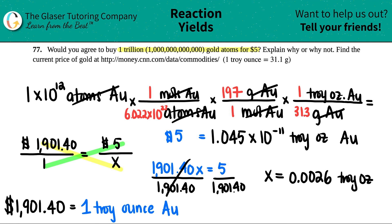This is what my friend was offering for five dollars. Is this a good deal when the true value of five dollars worth of gold is this amount? Absolutely not. When my friend says, hey, you want to buy one trillion gold atoms for five dollars, I would say heck no, big no. The true value would be 0.0026 troy ounces. Since I am getting such a little amount, it's not worth it.